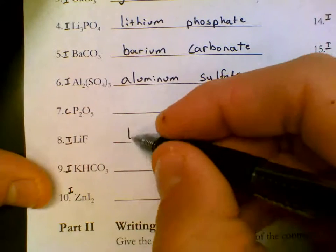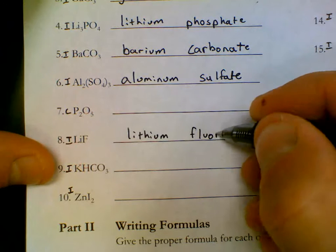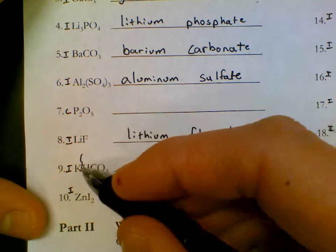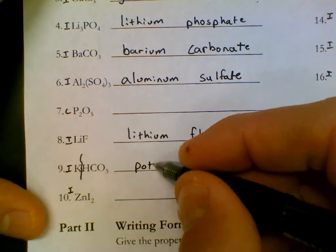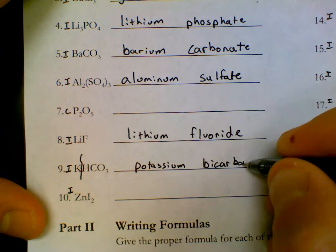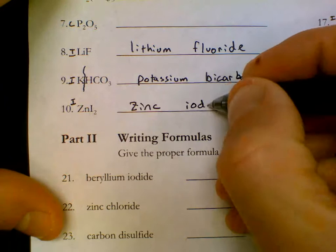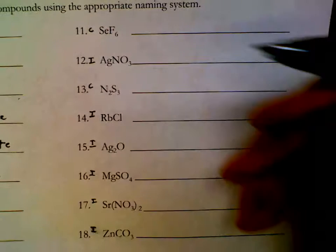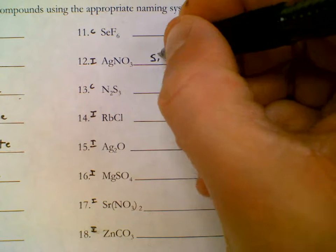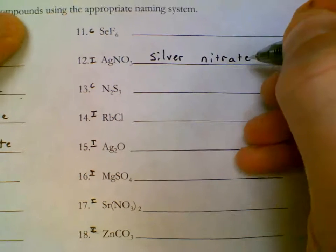Skip the covalent. Lithium and then fluoride. Remember to split the formulas after the first atom, so K is called potassium. HCO3 is bicarbonate. Zn is zinc, I is iodide.